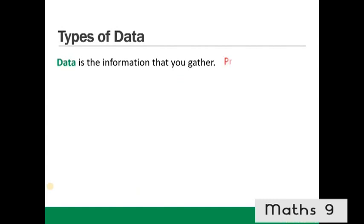Types of data. Data is the information that you gather. It could be primary data, which is where you gather it yourself, or secondary data, which is where you look at someone else's data.